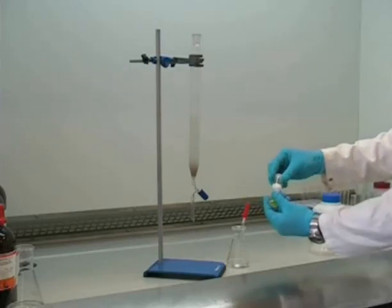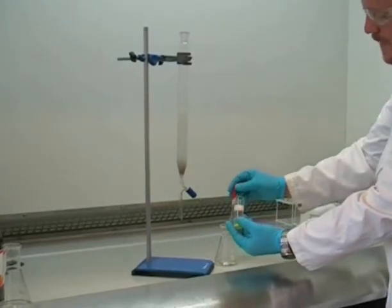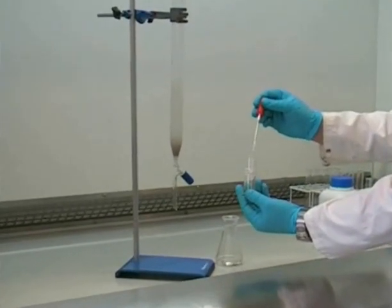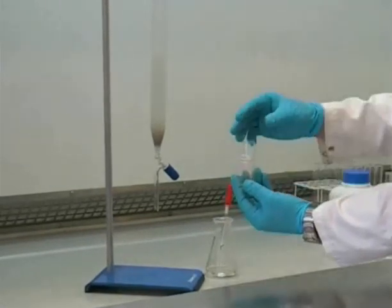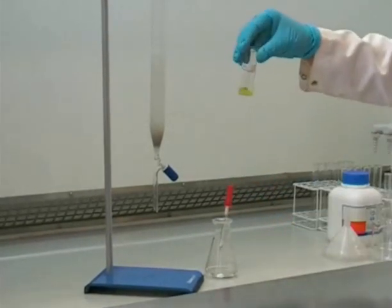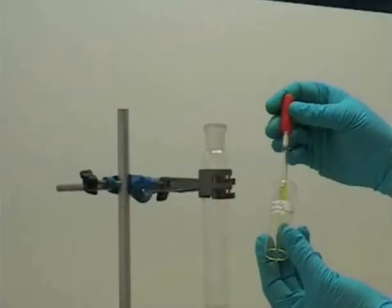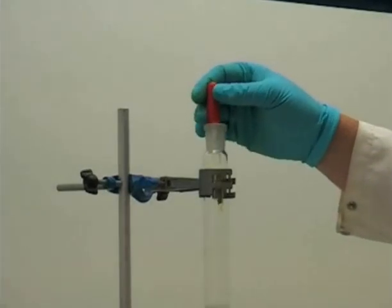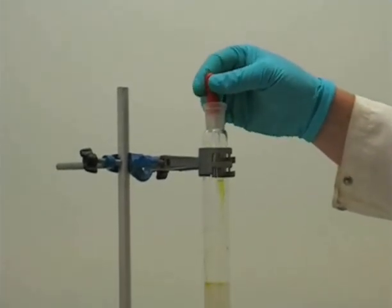The next stage is to load our crude compound onto the column. First of all, we need to dissolve it in a small amount of the eluent. It's important to ensure that all of the crude compound has been dissolved. And then the resulting solution can be added to the column using a glass pipette. Here you can see the solution is being added evenly around the sides of the column.